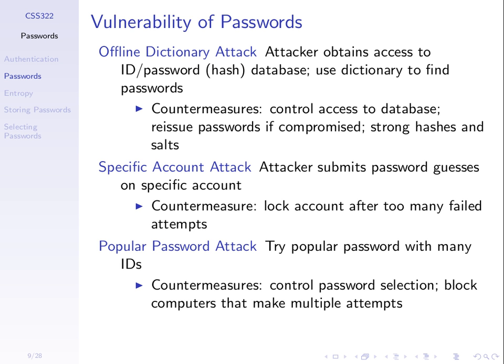We don't store the password in the database. We should store a hash of the password so that if someone discovers the database, they can't get the original password. Even better, store the hash of the password combined with some random value — a salt. An offline dictionary attack involves the attacker getting this database of hashed passwords, taking those hash values, and trying to work backwards to find the correct passwords. A brute force approach tries every possible value; a dictionary attack tries values which are most likely, like common words.